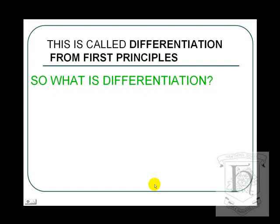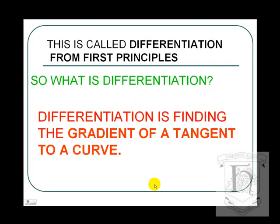So, let's state again what differentiation actually is. Differentiation is finding the gradient of a tangent to a curve at a particular point. And the derivative is written as dy over dx.